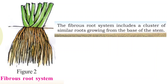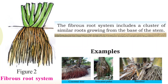The fibrous root system includes a cluster — that means a group — of similar roots growing from the base of the stem. These roots grow from the base of the stem and are all similar in size and thickness. They grow as a group, not from one main root. This is the fibrous root system.